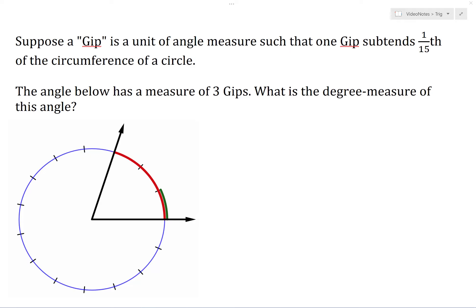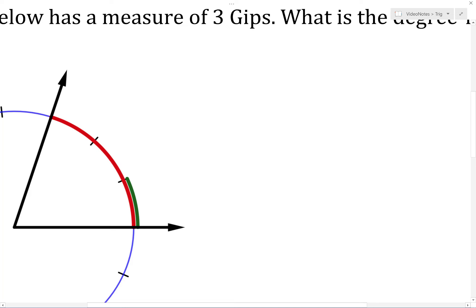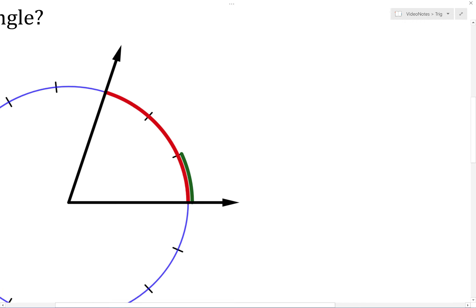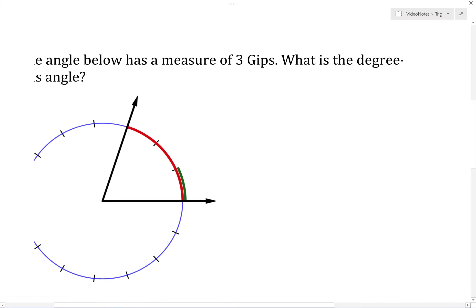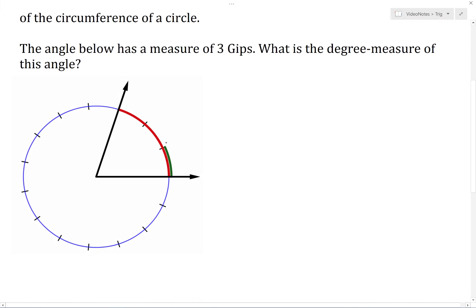Suppose a GIP is a unit of angle measure such that one GIP extends 1/15th of the circumference of a circle. The angle shown below has a measure of 3 GIPs, and we want to know the degree measure of this angle. If we look at this diagram, each one of these tick marks along the circle represents 1/15th of the circumference, which is 1 GIP. So this little green arc here is 1 GIP, and we can see that this angle does have a measure of 3 GIPs.